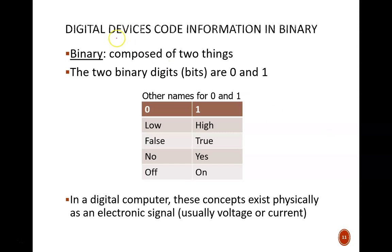Binary simply means composed of two things. Those two things are often represented as 0 and 1. But 0 and 1 are simply math symbols used to represent other concepts. A 0 could mean a numeric 0, but it could also mean low, false, no, off, or many other ideas. Similarly, a 1 could mean a numeric 1, but it could also mean high, true, yes, or on.